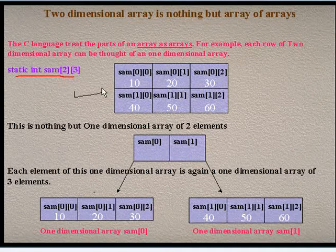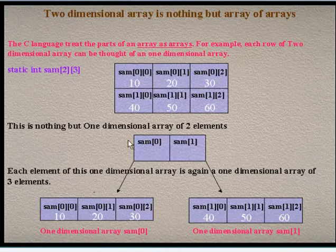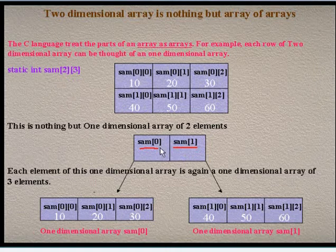We can say that this two-dimensional array is nothing but a one-dimensional array of two elements, that is SAM[0] and SAM[1]. So, SAM is a one-dimensional array with two elements, SAM[0] and SAM[1].